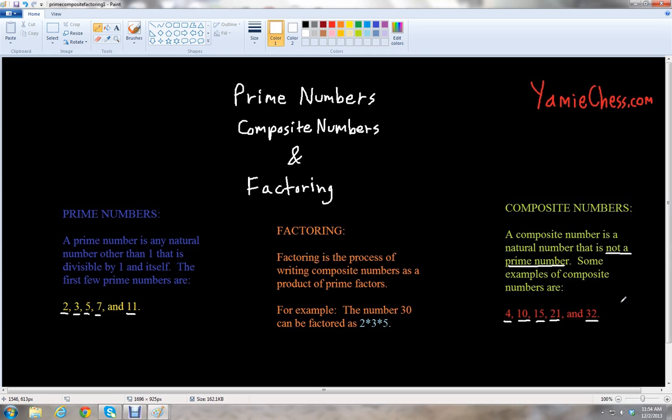So we know prime numbers and composite numbers. This leads us to the next term which is called factoring. Factoring is a process of writing composite numbers as a product of prime factors.